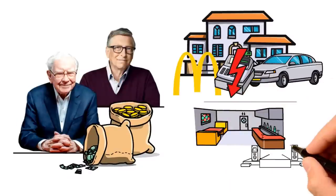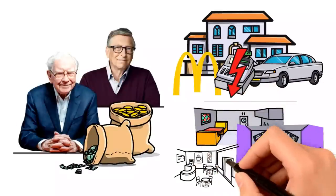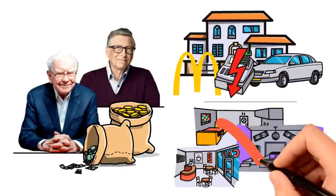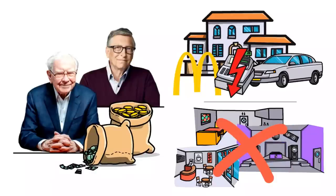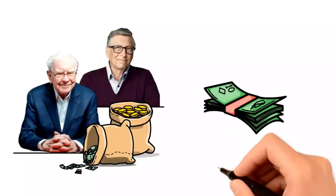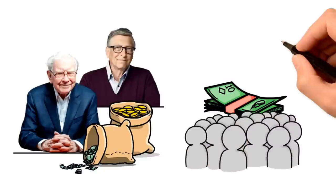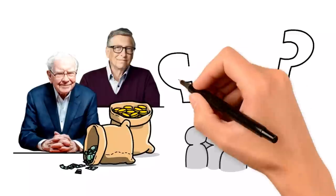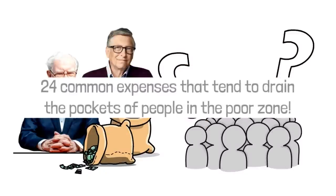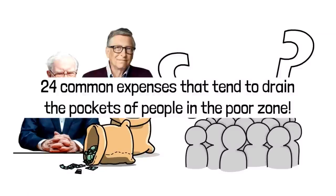People we consider rich, like Warren Buffett and Bill Gates, consciously choose where their billions go, setting themselves apart from many poor individuals. They actually lead a comfortable existence. The key difference lies in their deliberate approach to spending their wealth. So in this video, I'll dive deep into the 24 common expenses that tend to drain the pockets of people in the poor zone and show you how you can change these habits.